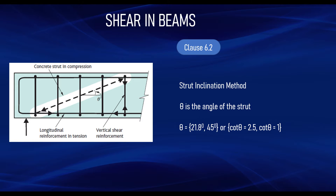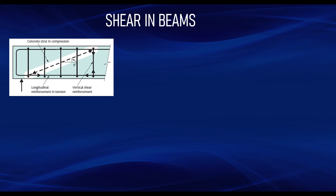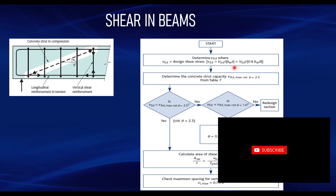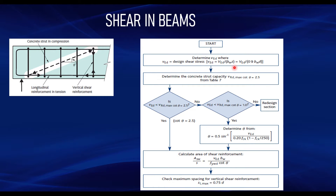Based on this, let us look at the general procedure for designing shear reinforcement in beams. The first step is to determine your design shear stress, which is given by the shear force divided by bw times z. Here bw is the width of the beam — for a rectangular beam it is simply the beam width, and for a flanged beam it is the web width. The lever arm z, when not known, is given as 0.9 multiplied by the effective depth of the beam.